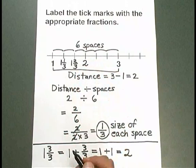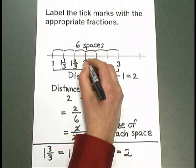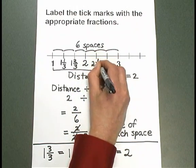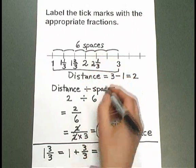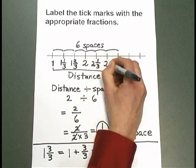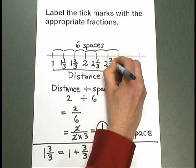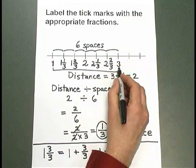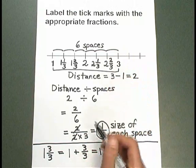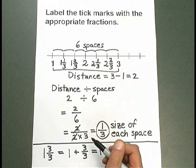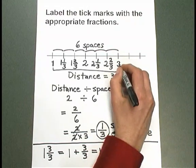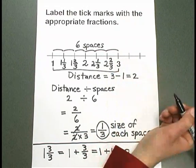That's the simplest way to label that tick mark. Now let's continue adding a third. 2 plus 1 third is 2 and 1 third. Plus another third is 2 and 2 thirds. Plus another third is 2 and 3 thirds. But 2 and 3 thirds is the same as 2 plus 1 or 3. So we land right on the 3 that's already labeled there.